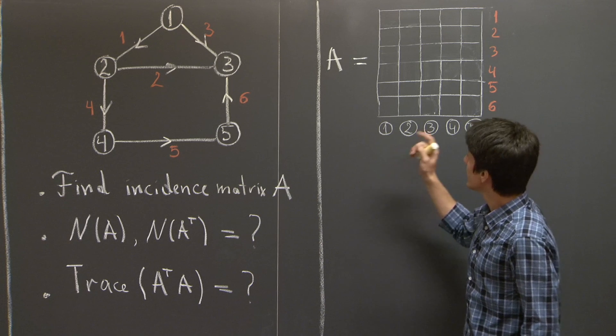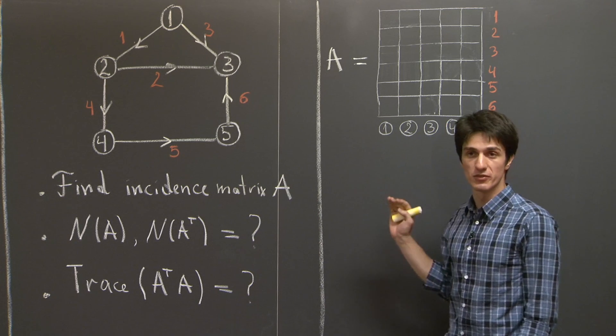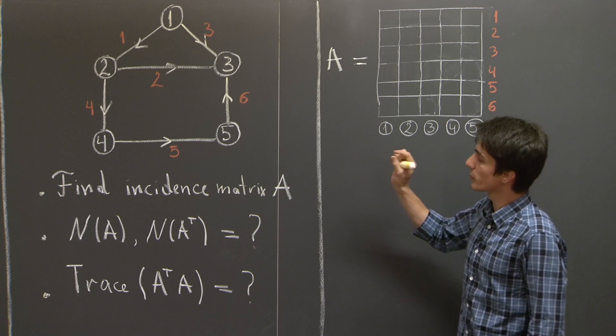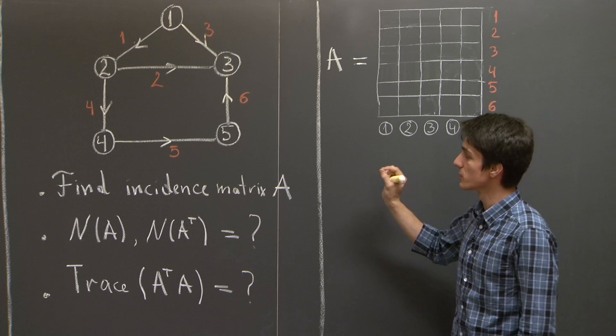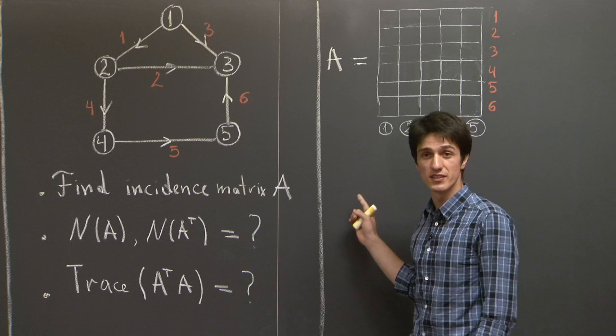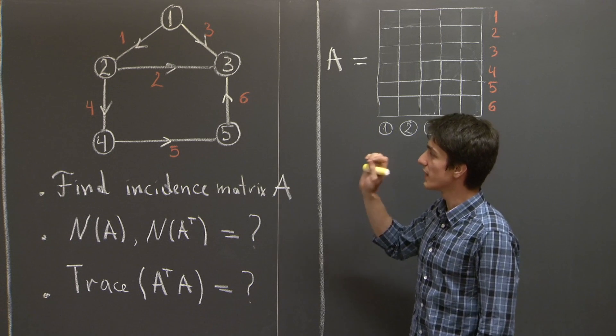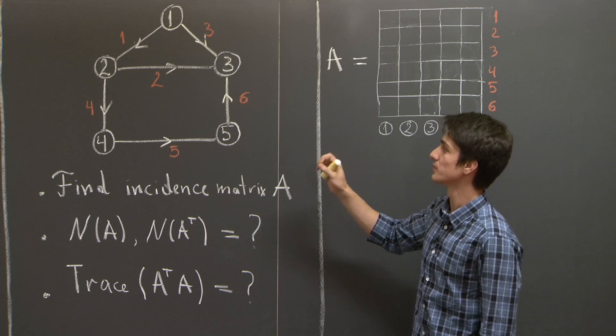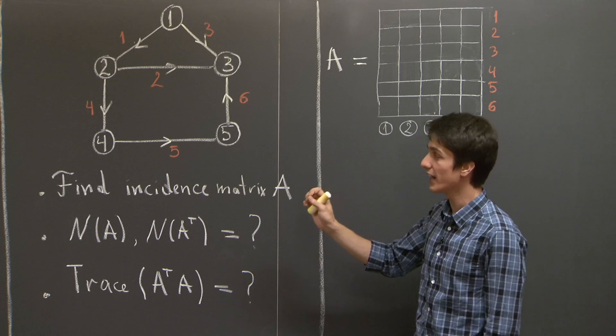And we're going to fill in the rows, and we'll fill them out as follows. So we're going to use only negative 1, 1, and 0.